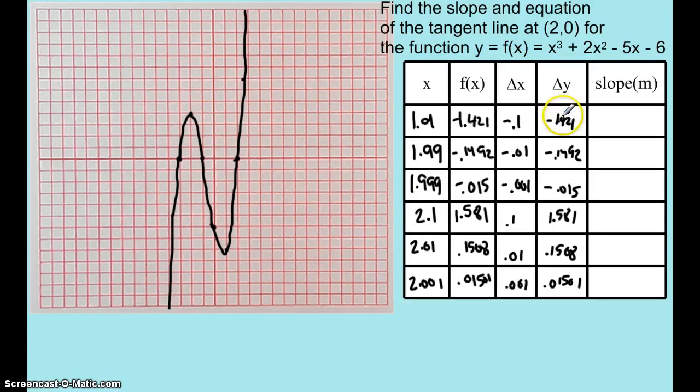Now let's go ahead and figure out those slopes. Negative 1.421 divided by 0.1, 14.21. Negative 0.1492 divided by negative 0.01, 14.92. And negative 0.015 divided by negative 0.001, 15.00. And this looks like it's going to be 15.81, 15.08, 15.01.